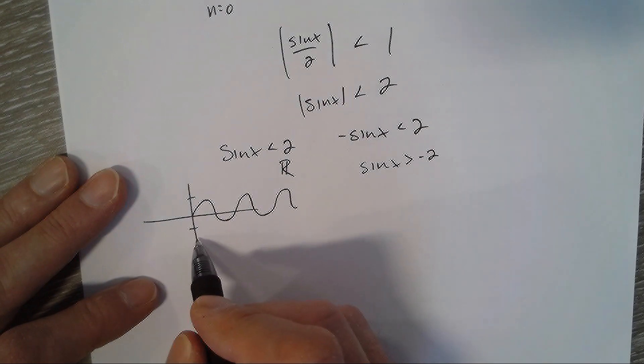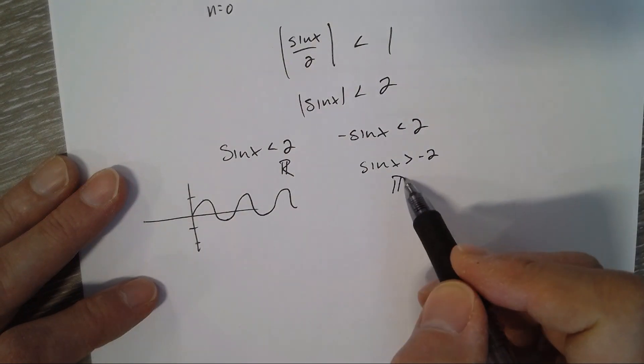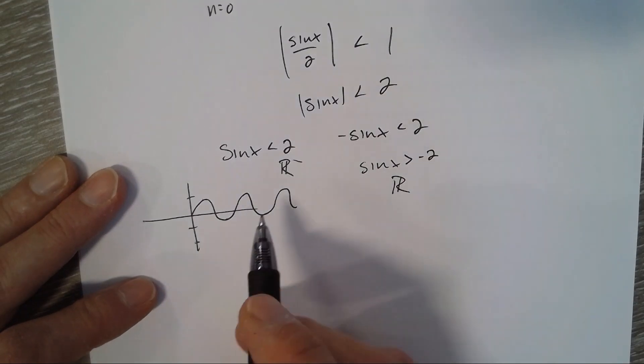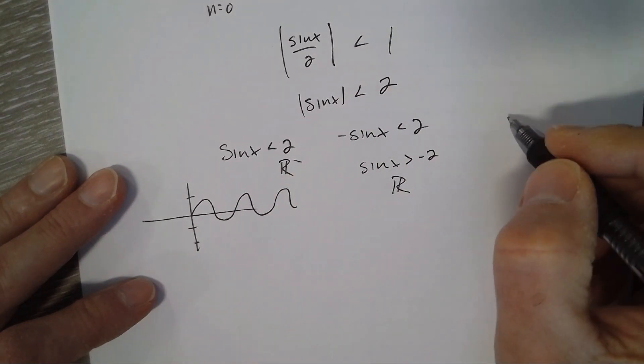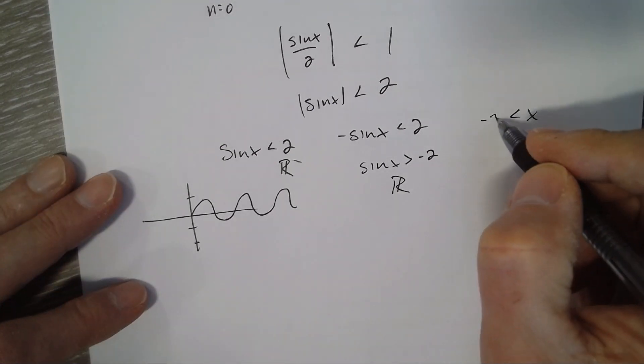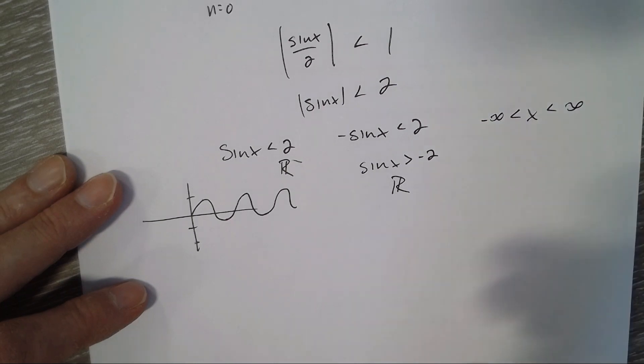So where is sin x greater than negative 2? Negative 2 is down here, so it's always greater than negative 2. So the intersection of these two intervals is going to be all real numbers. The interval would be negative infinity to infinity.